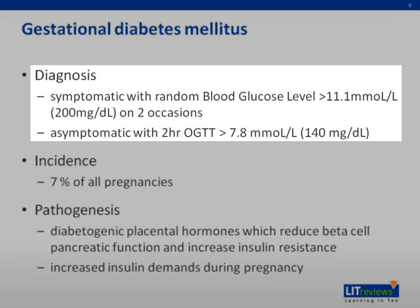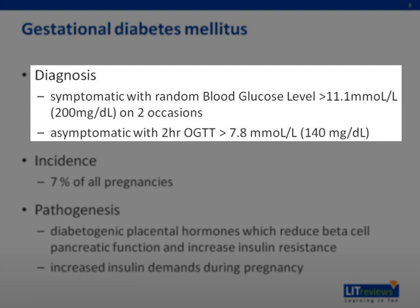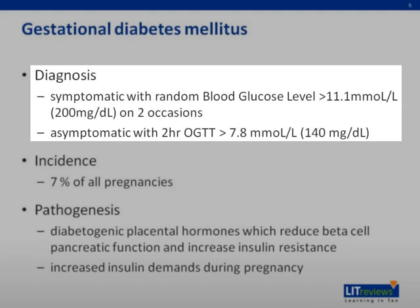Diagnosis is made either when a symptomatic patient has random blood sugar levels of more than 11.1 on two separate occasions, or when an asymptomatic patient has a second hour oral glucose tolerance test result of more than 7.8.